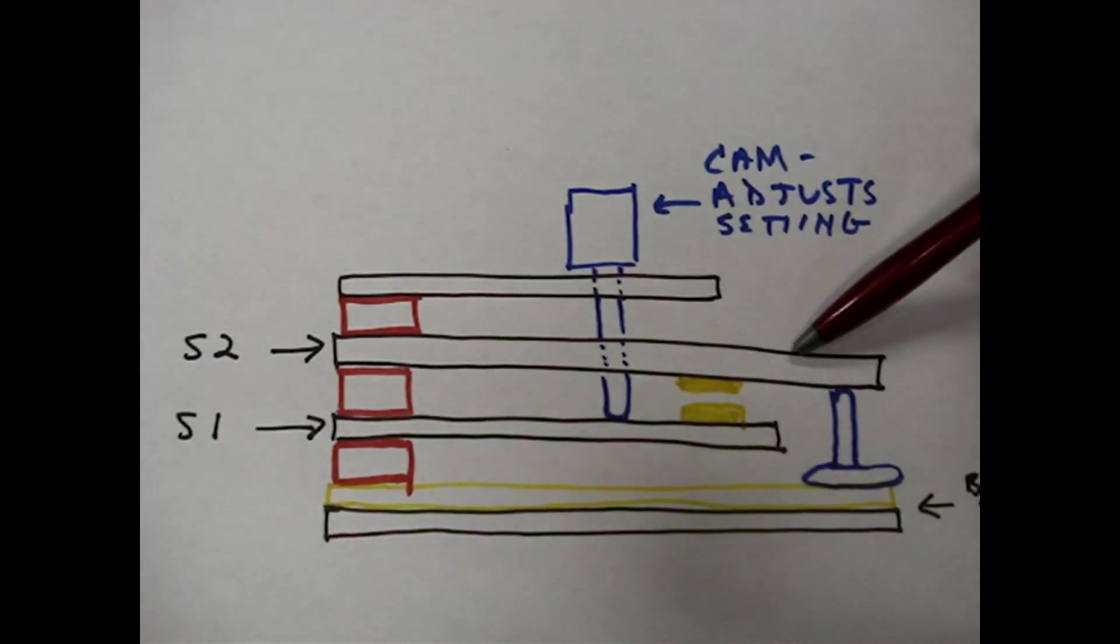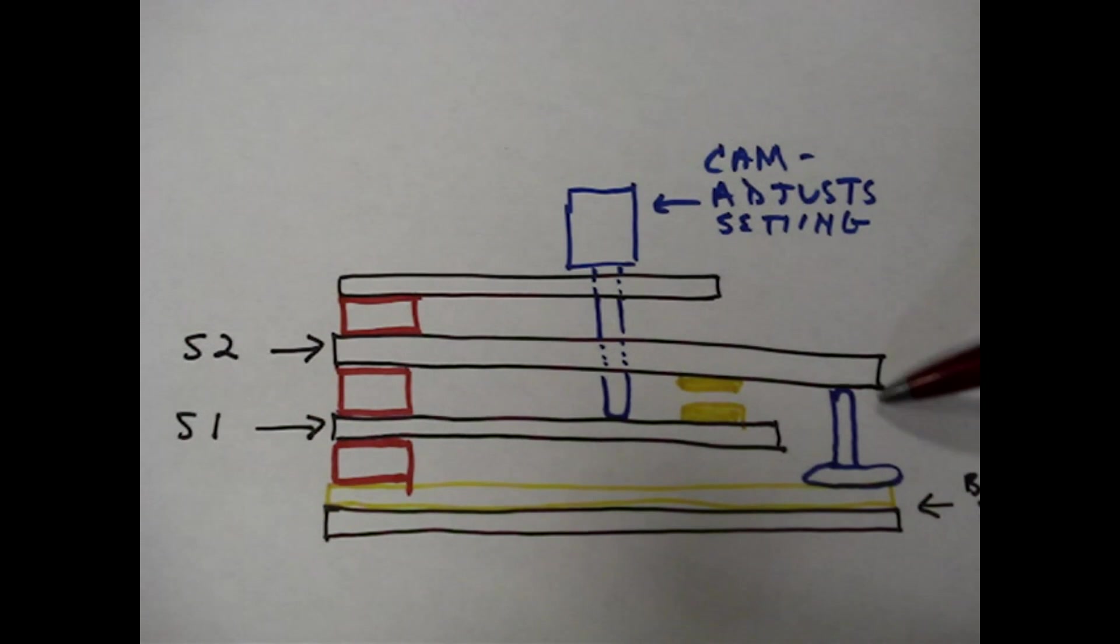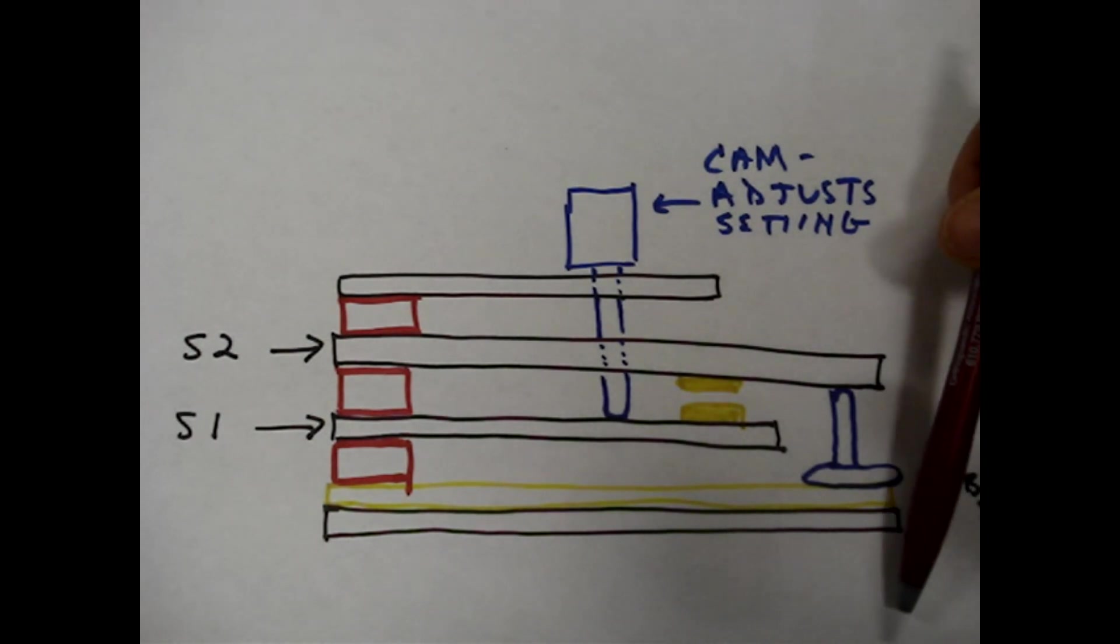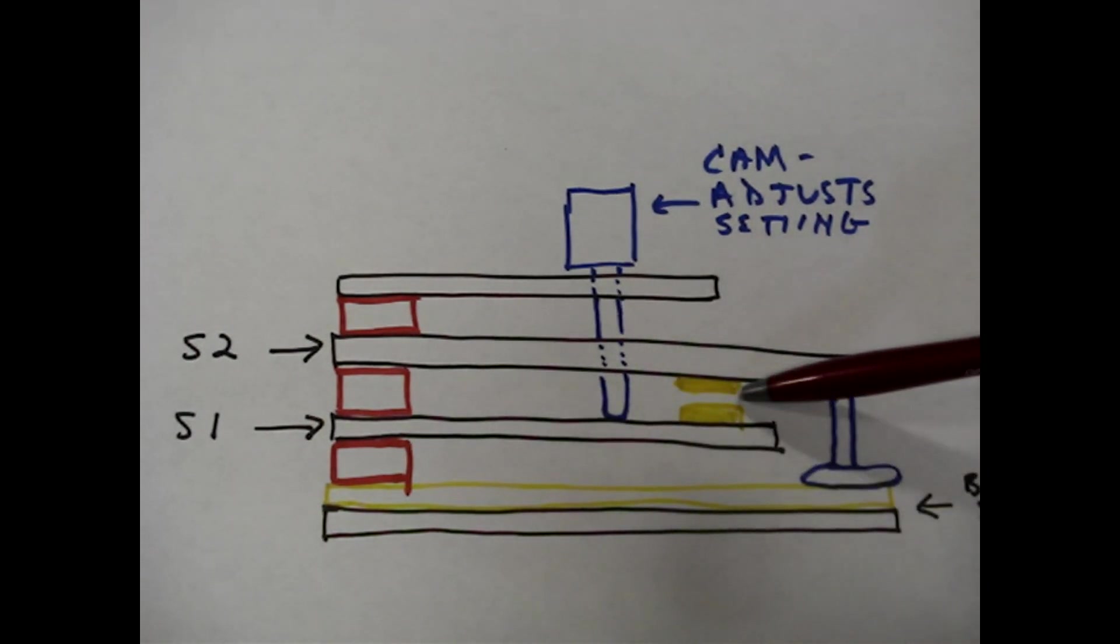This strip is spring-loaded and moves in unison with the bi-metallic strip so that when the temperature rises and the strip moves in this direction, it closes the contacts.